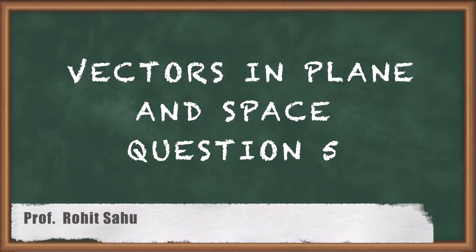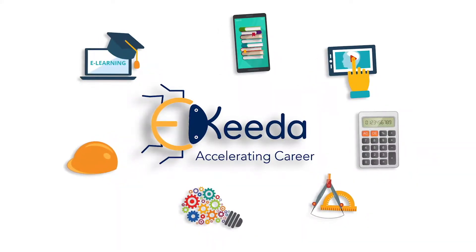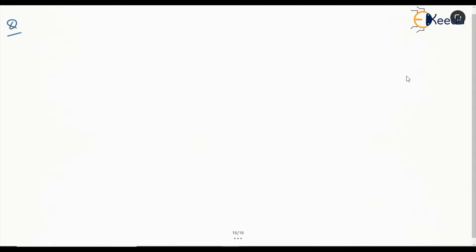Hello everyone, in this session we will discuss a question on vectors in planes and space. It says, find the nearest point to the origin on the plane x plus 2y plus 2z equal to 5.